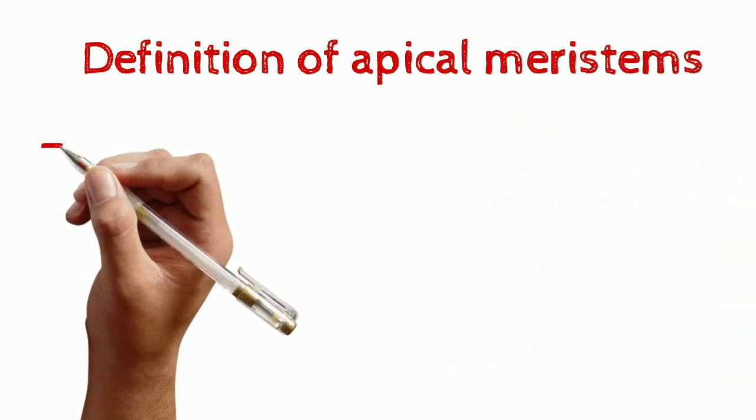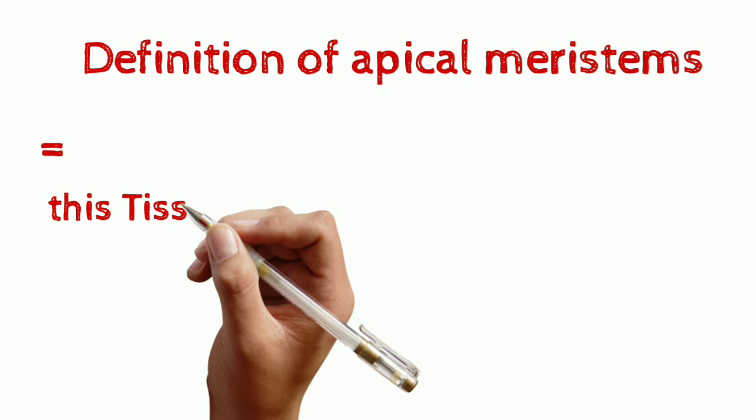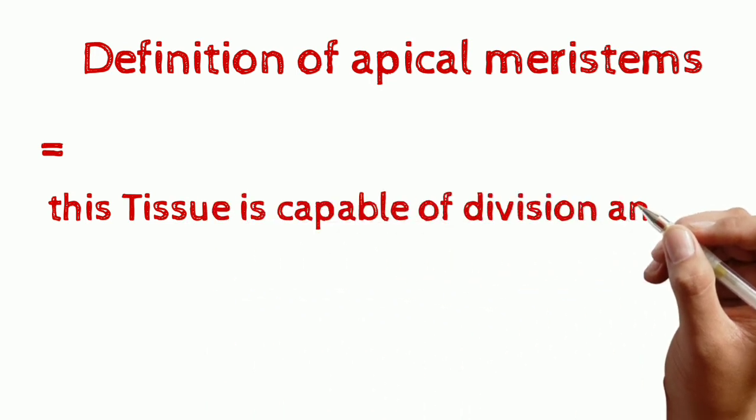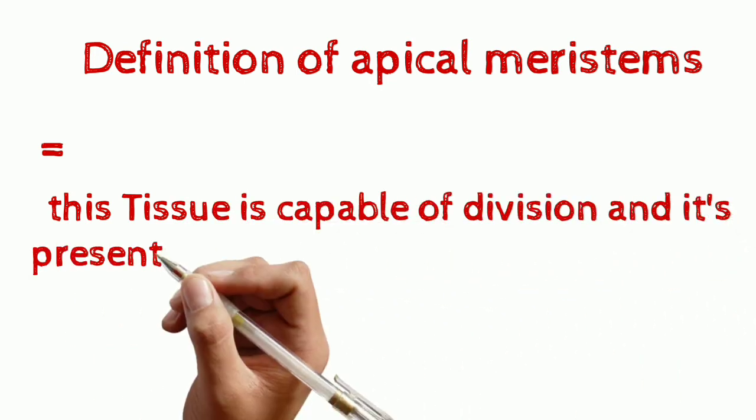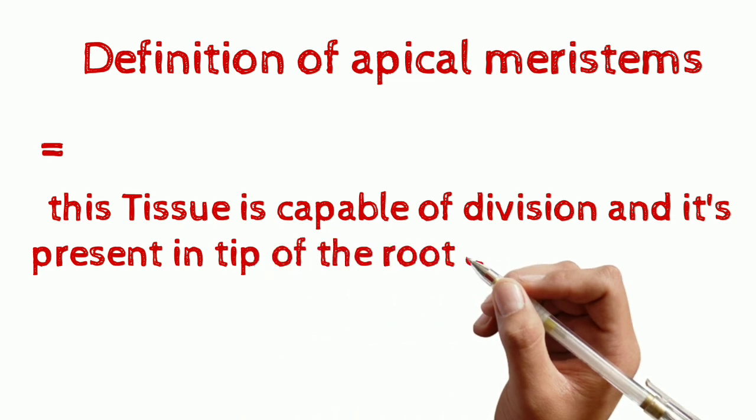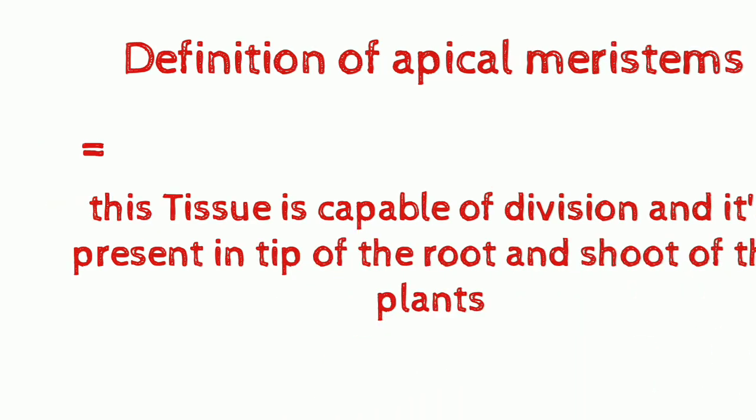Apical meristematic tissues play a good role in the growth of plants. This tissue is capable of division and is present in the tip of the root and shoot of the plant.